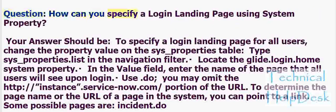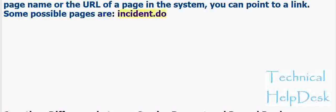Question: How can you specify a login landing page using a System Property? To specify a login landing page for all users, change the property value on the sys_properties table. Type sys_properties.list in the navigation filter, locate the glide.login.home system property, and in the Value field enter the name of the page all users will see upon login — using .do. You may omit the http://instance.servicenow.com/ portion of the URL. To determine the page name, you can point to a link. Some possible pages are incident.do, contact.do, and so on.